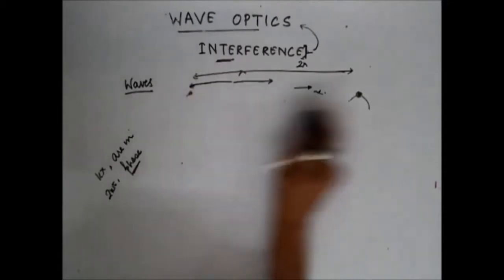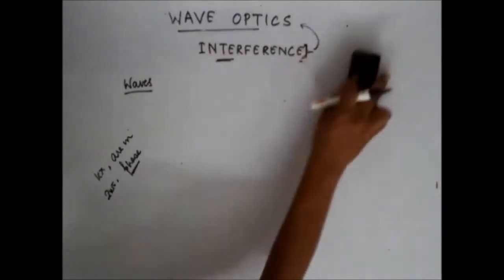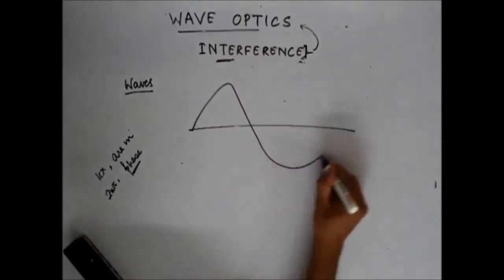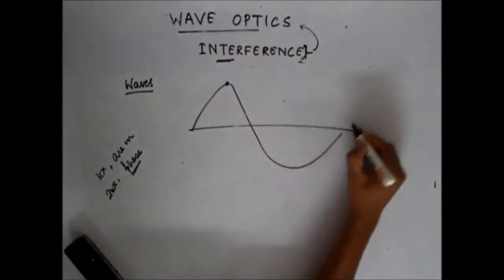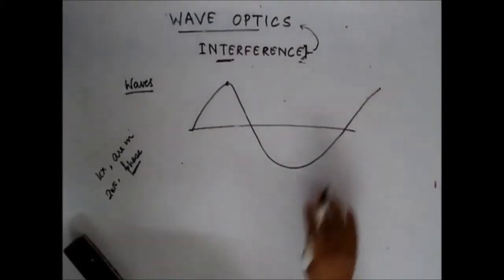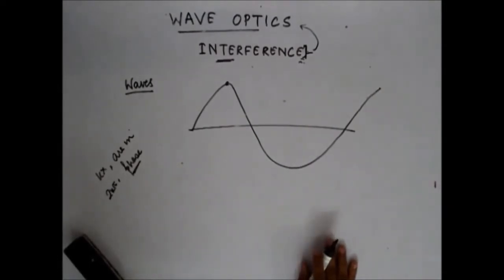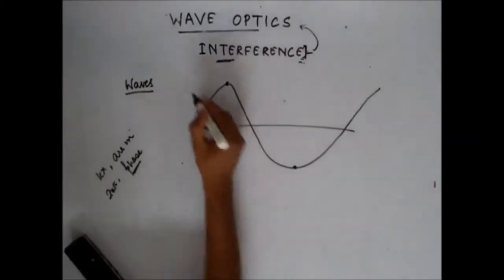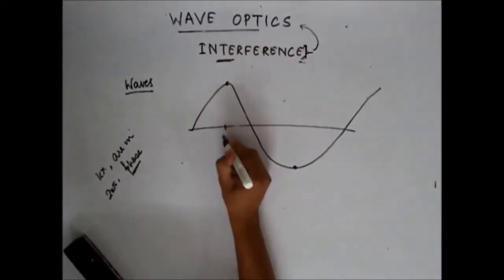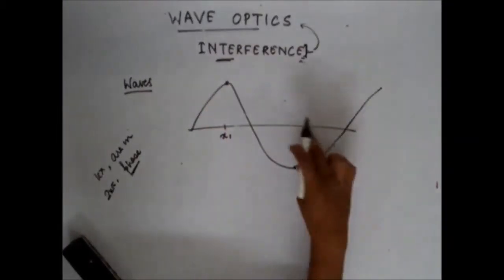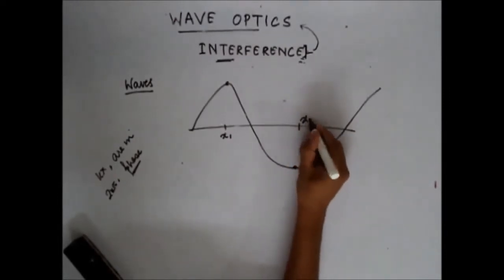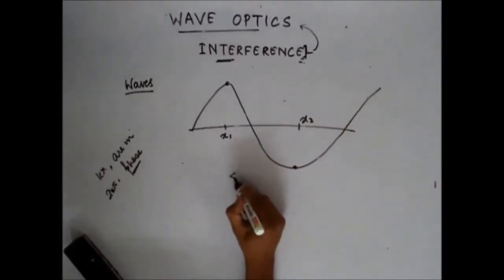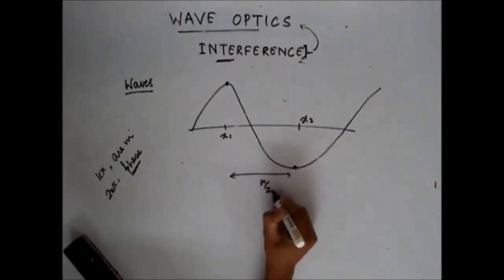Let's take two particles: a particle at x1 which is at its maximum, and a particle at x2 which is at its minima. Now what is this distance between them? This distance, as you can see, is λ/2.